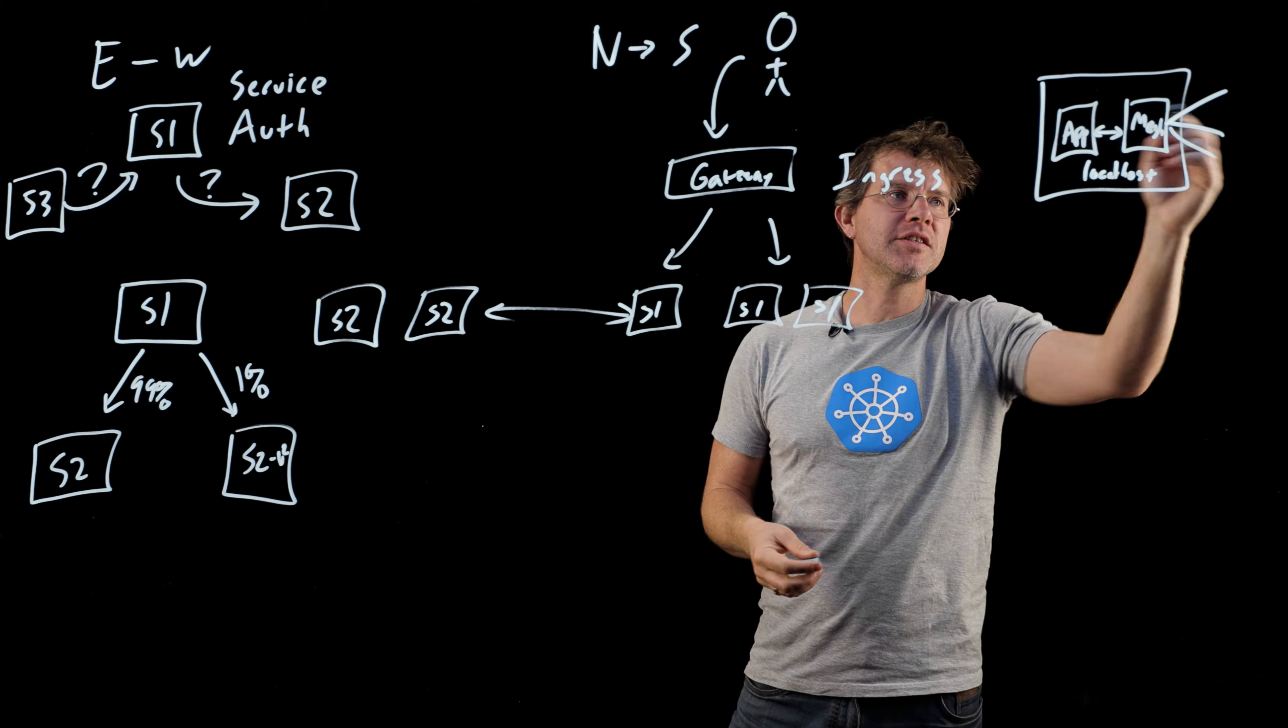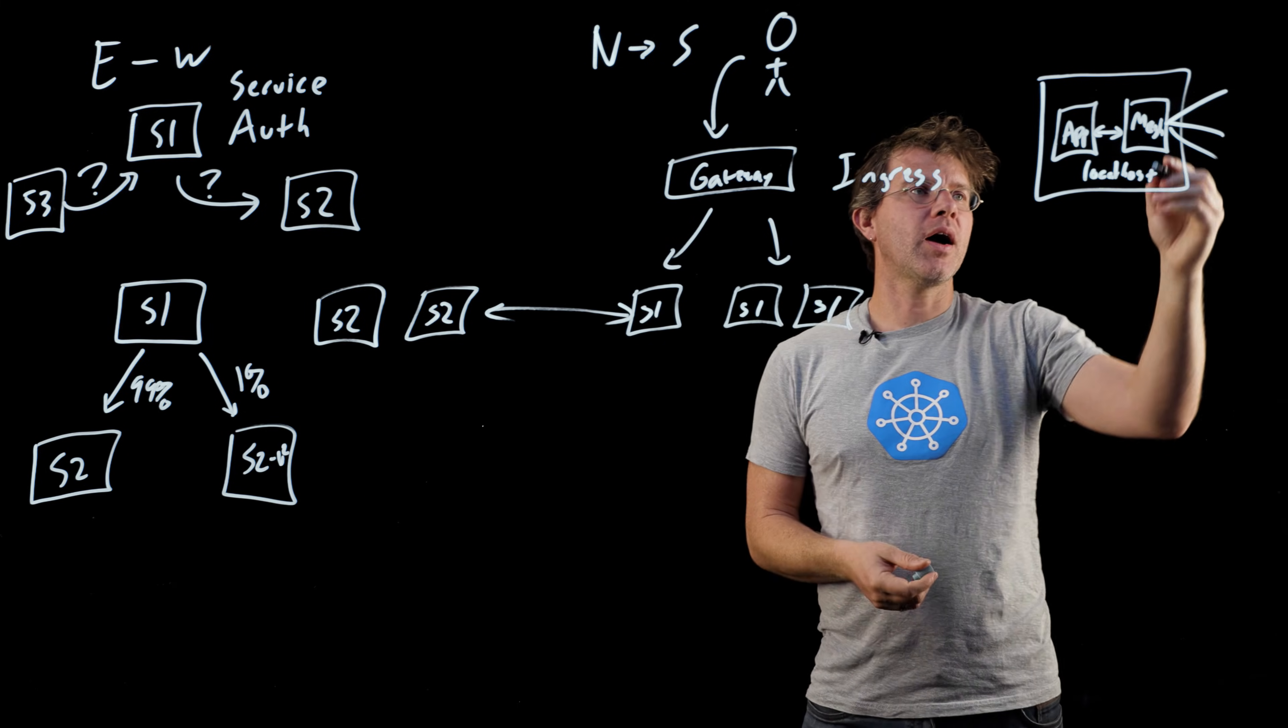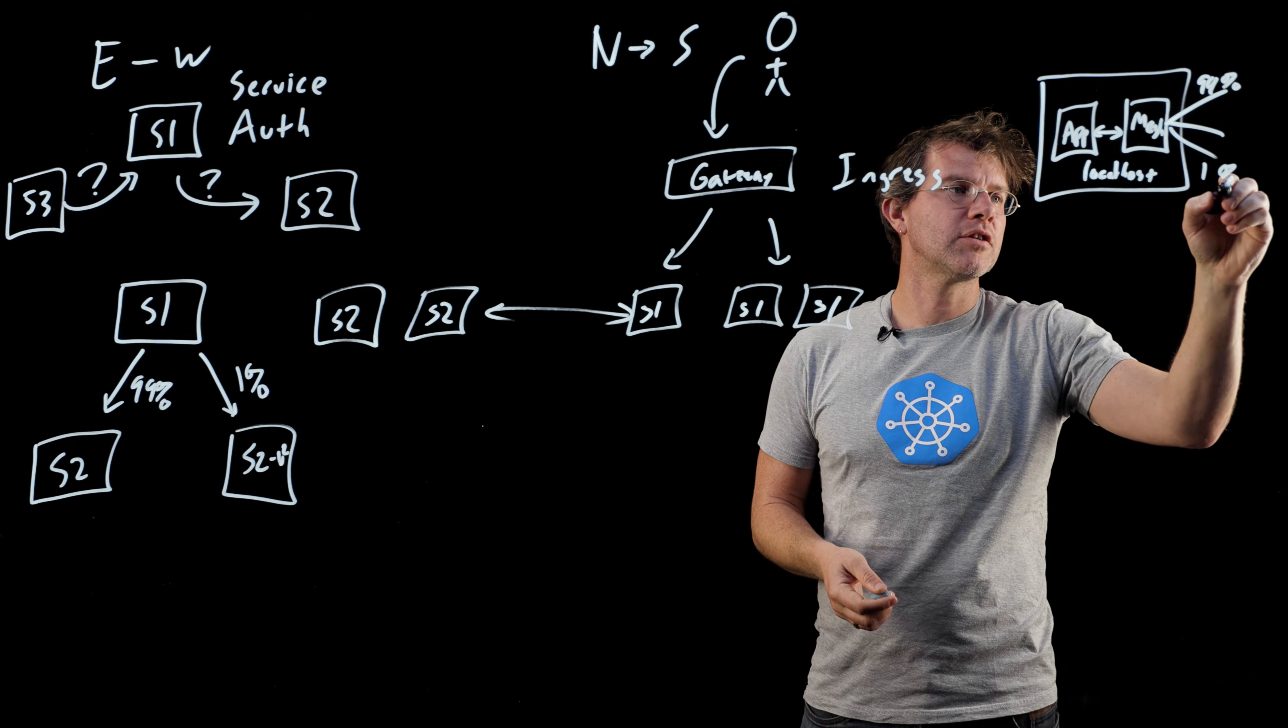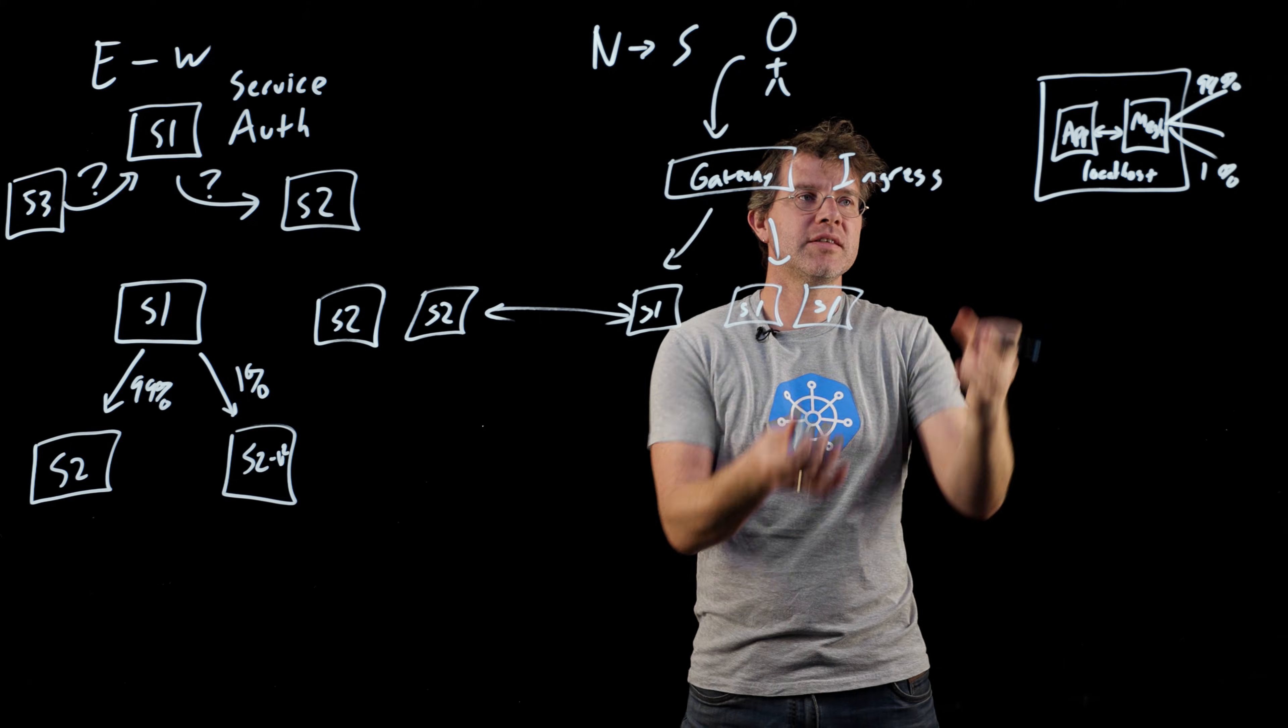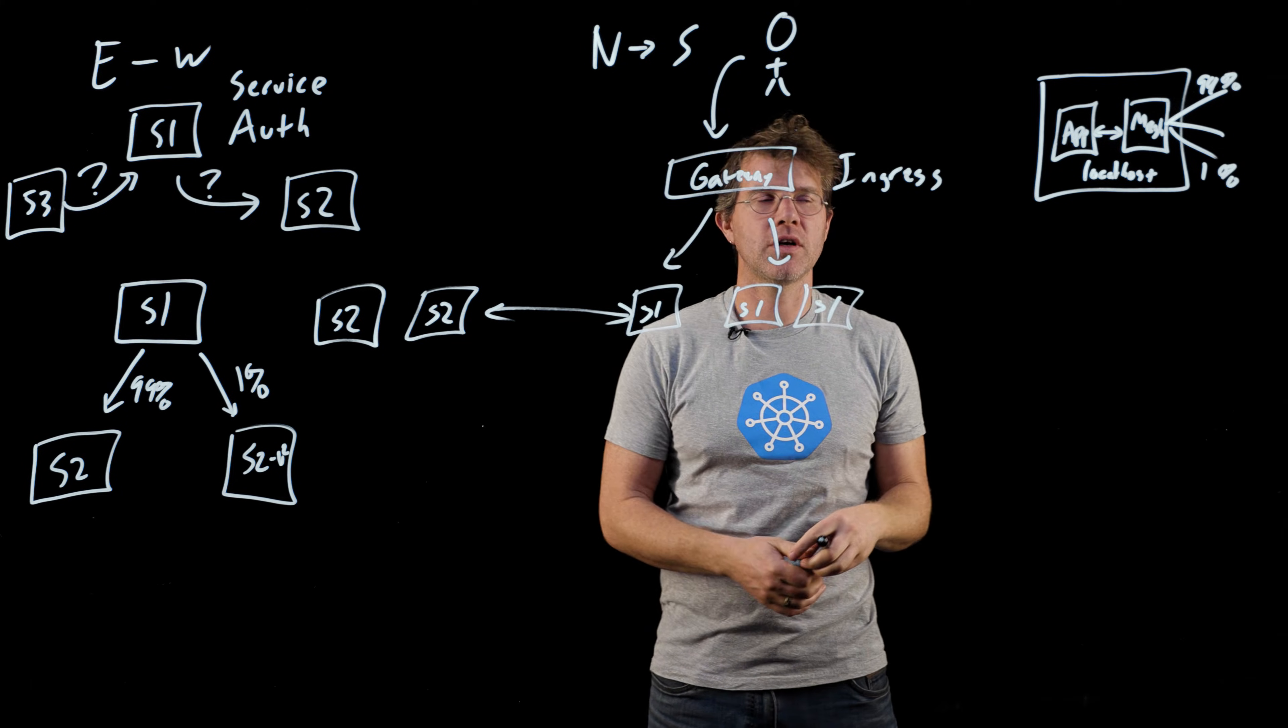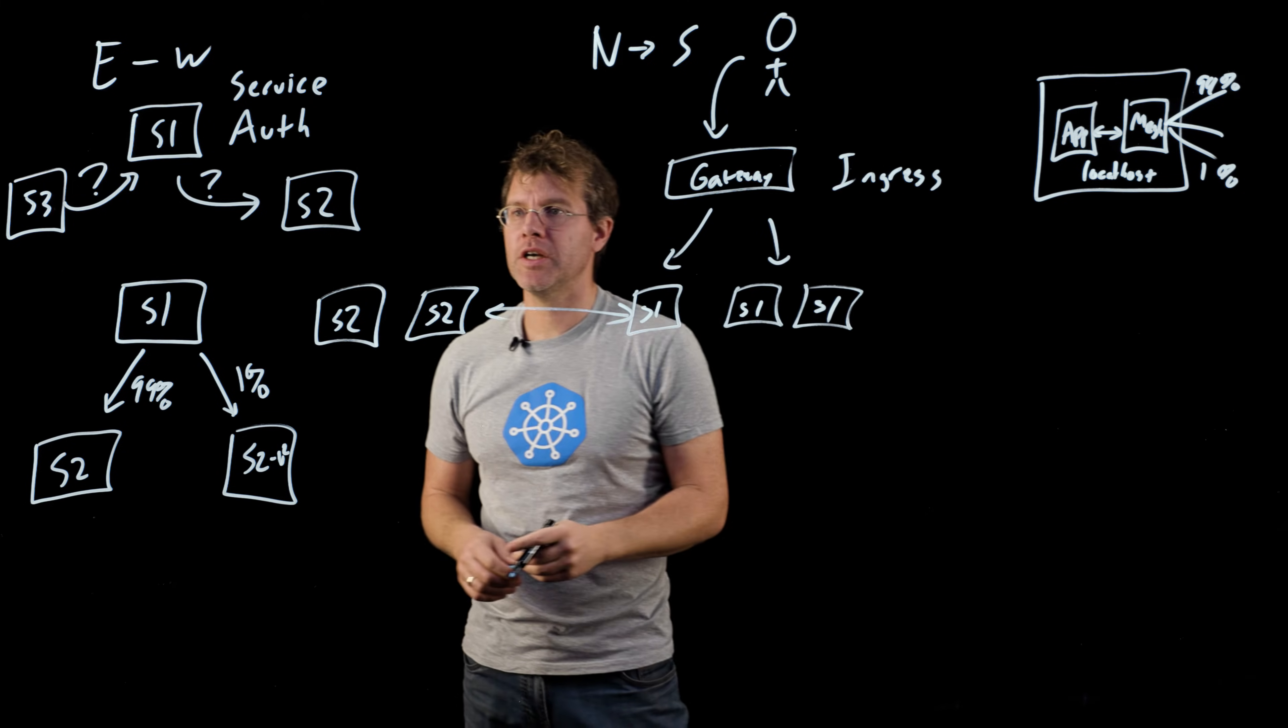over here in the sidecar, it's proxying for you. And when it's doing that proxy, it can send 99% of the traffic in one direction and 1% of the traffic in the other. What's important is the application doesn't even know the difference. You didn't have to reconfigure your application at all in order to achieve this kind of experimentation.